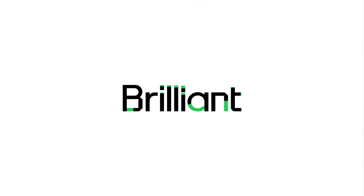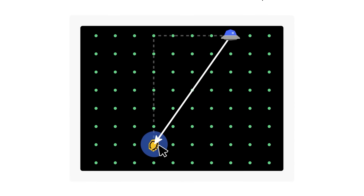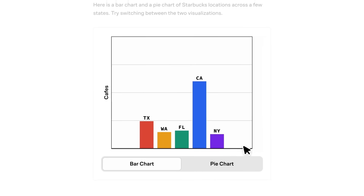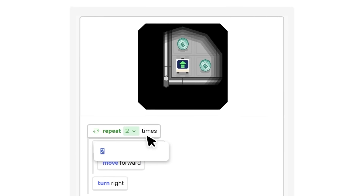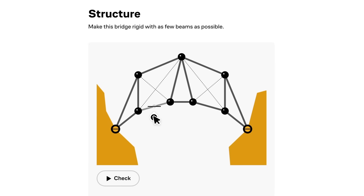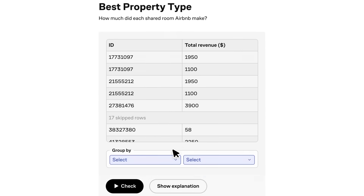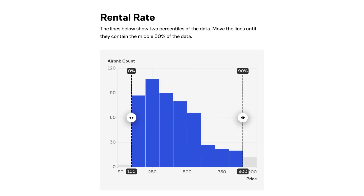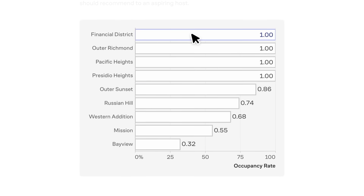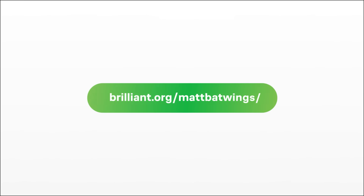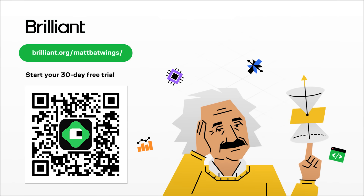Check out the top link in the description for Brilliant, the sponsor of this video. Brilliant is a platform to learn math, data analysis, programming, and AI. The lessons are filled with hands-on activities, which are both more engaging and more beneficial than just watching a video. To try everything Brilliant has to offer for free for a full 30 days, visit brilliant.org/mattbatwings or scan the QR code on screen. You'll also get 20% off an annual premium subscription.